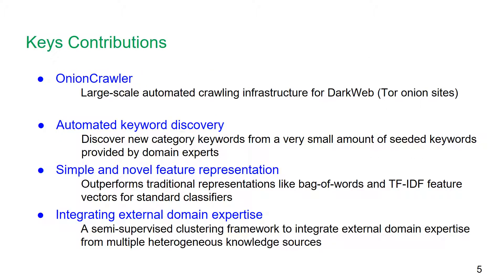The key contributions of this work are as follows. First, we have carefully engineered an in-house, fully automated onion crawler that runs daily to acquire new Tor onion domains. Second, we propose an automated keyword discovery algorithm that automatically discovers new keywords which are otherwise difficult to detect by humans. Third, we present a simple and novel feature representation that works well with standard classifiers.